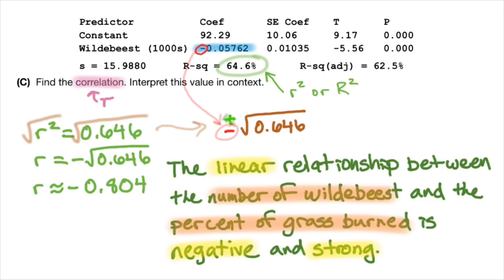And lastly, you've got to make sure that you have context. So there are four main things you've got to talk about when you talk about R. You have to say that it's linear. You have to say whether it's positive or negative. You have to give a measurement of strength: weak, moderate, or strong. You could also say moderately strong or moderately weak. And lastly, the context. You've got all four of those, you'll get yourself full credit.